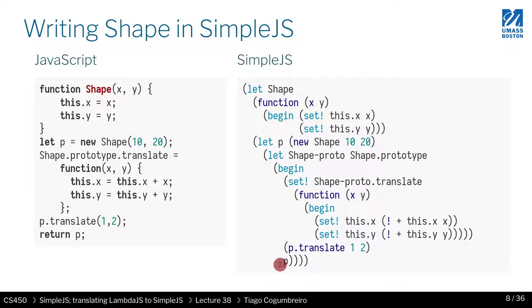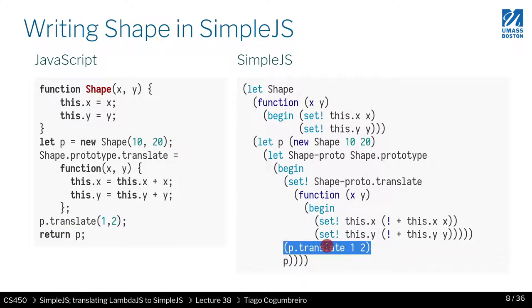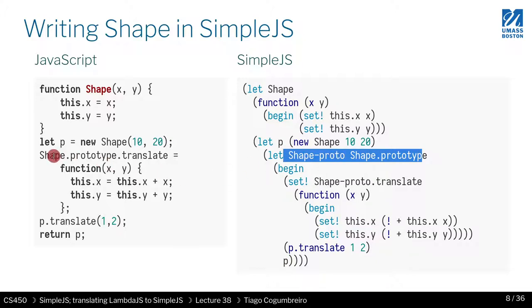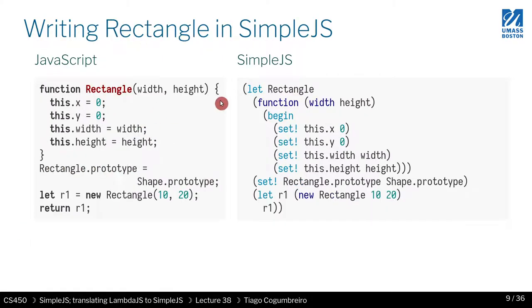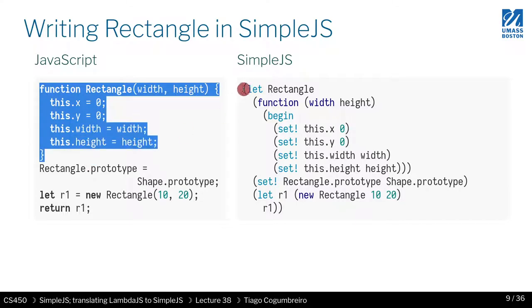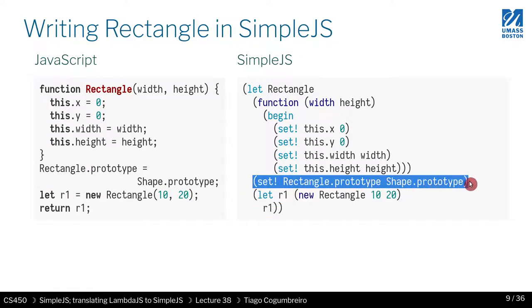When you have a method call where you're calling translate, you call object.field and then pass the arguments. If you want to return p, you just return p right there. The only two tricky things are: first, you have to store the first assignment in a temporary variable, and second, you need to prefix function calls with the exclamation mark. This is the running example where we're defining shape and creating an instance of it. The second example is rectangle extending shape.prototype, and you can see almost everything is the same as before.